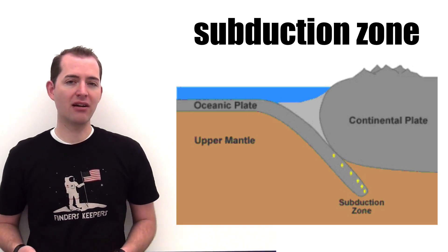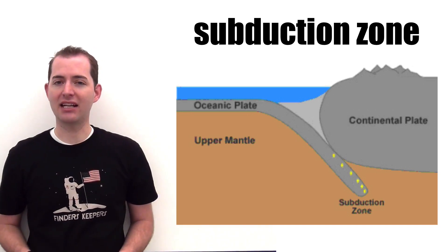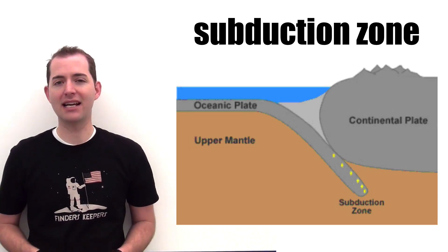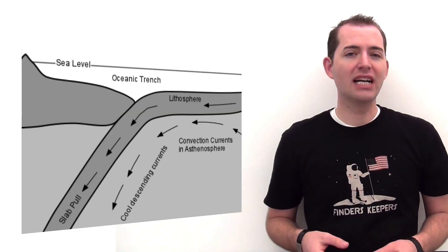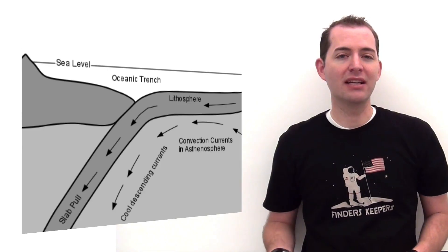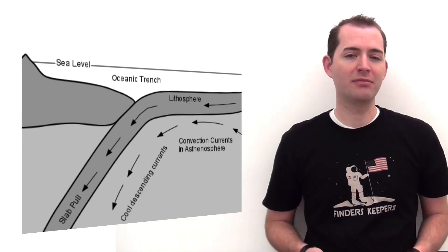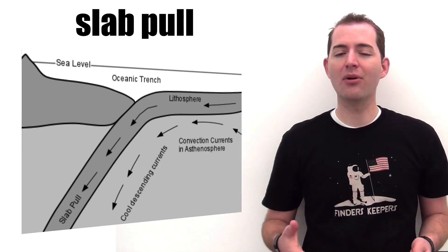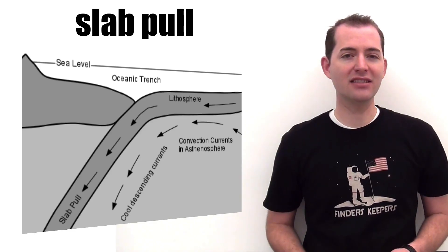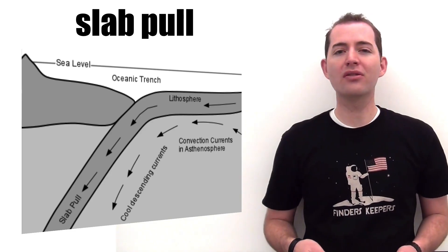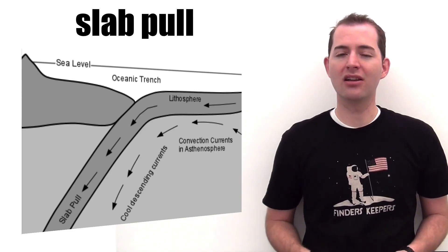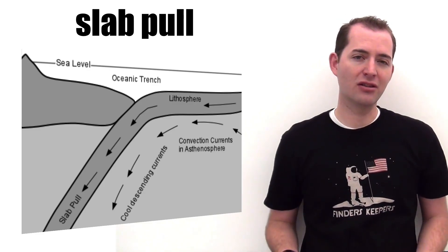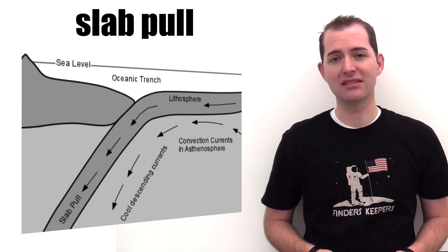These types of mountain ranges are typically volcanic as well because of the rising magma inside of them. The sinking oceanic plate also helps to explain the third mechanism of the theory of plate tectonics, which is slab pull. As that more dense plate sinks into the asthenosphere, it continues to pull the rest of the plate along with it. Scientists are unsure how deep this subduction zone goes into the asthenosphere.